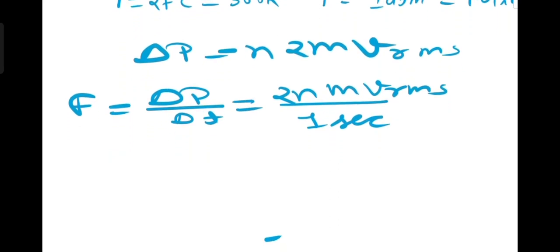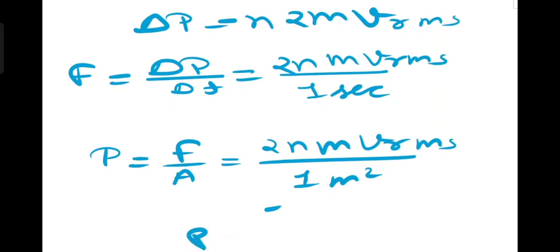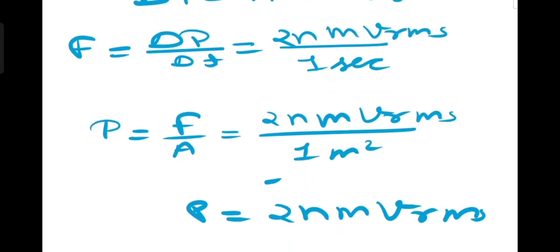Pressure equals force by area. Area is given as 1 square meter. Force is 2N m Vrms. So P equals 2N m Vrms. Therefore N equals P by 2m Vrms. Pressure is 1 atmosphere, equal to 1.013 times 10 to the power 5 pascals.